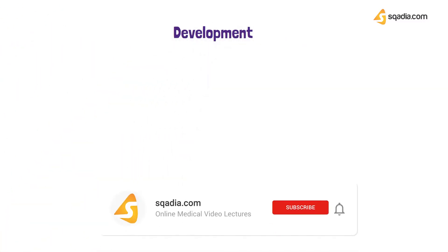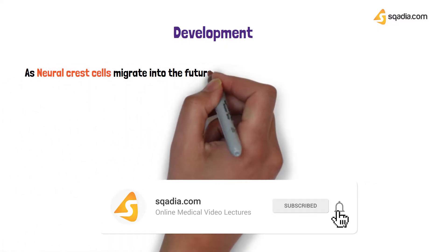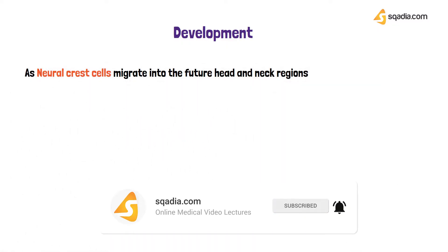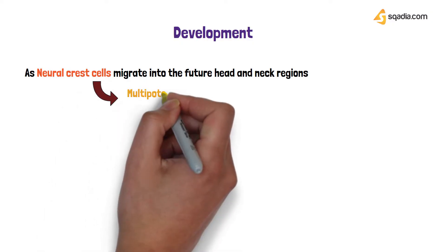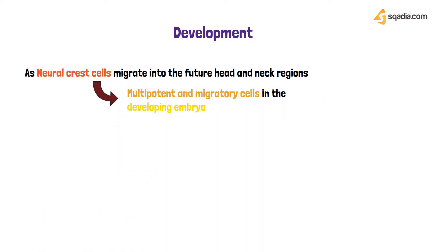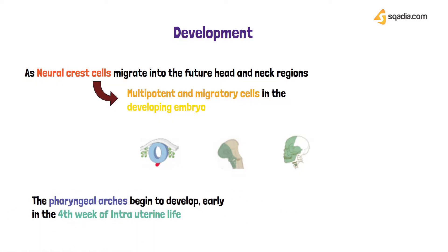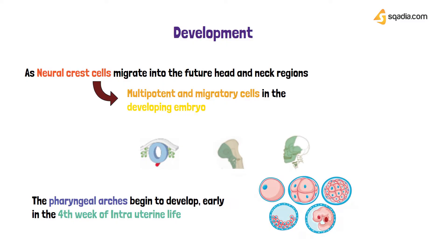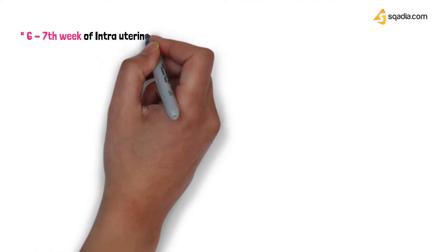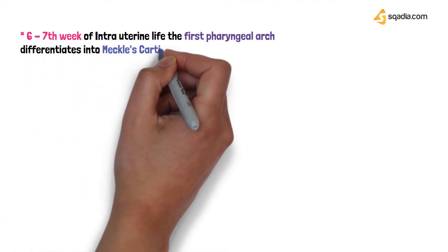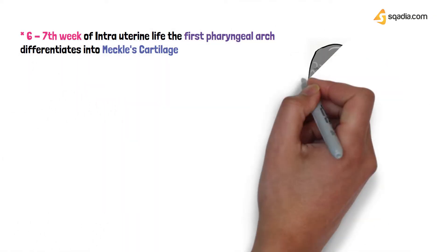Neural crest cells are very important — these are multipotent cells that contribute to the formation of a wide range of tissues. When these cells migrate to the head and neck region, they form a wide range of tissues. In the fourth week of intrauterine life, they travel to the head and neck region and form the pharyngeal arches.